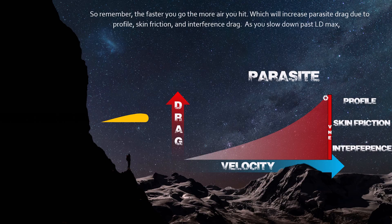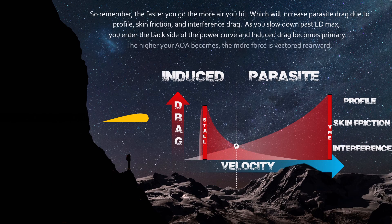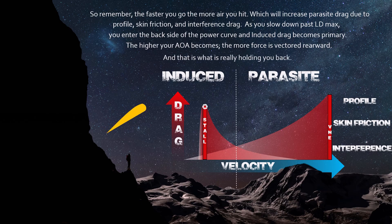As you slow down past LD Max, you enter the backside of the power curve, and induced drag becomes primary. The higher your angle of attack becomes, the more force is vectored rearward — and that is what is really holding you back.